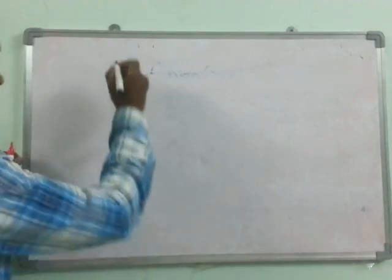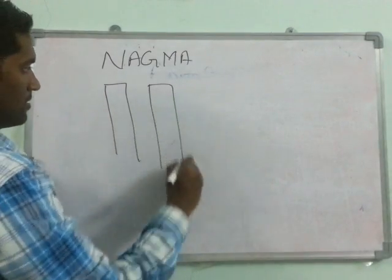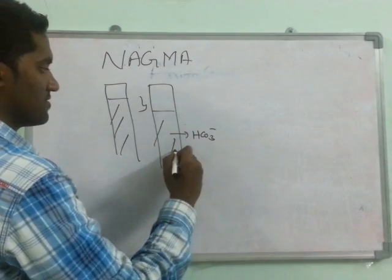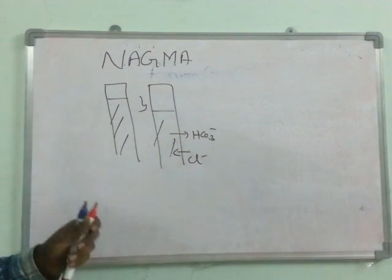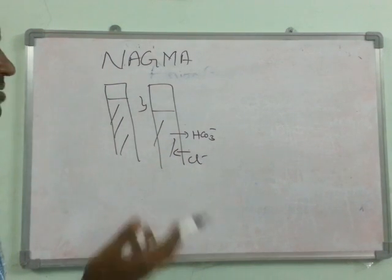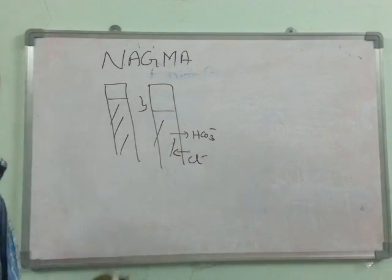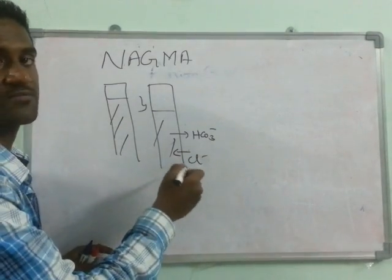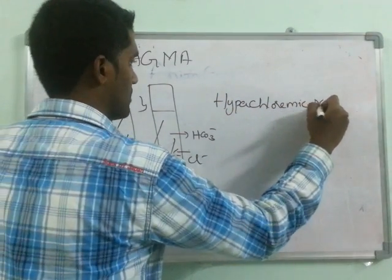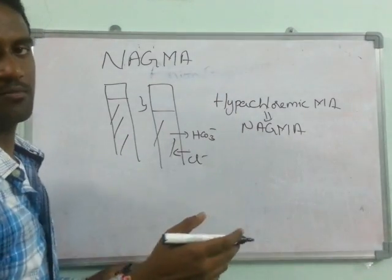Now coming to another important topic: non-anion gap metabolic acidosis. Considering this being the anion gap, here there is HCO3 minus and Cl minus. Whenever there is loss of HCO3 minus, there will be reciprocal reabsorption of Cl minus. So if 10 moles of HCO3 minus are lost, Cl minus will be replenished and the anion gap will remain constant. That is why it is also called hyperchloremic metabolic acidosis and non-anion gap metabolic acidosis — we usually use these two terms together, though there is a small difference.